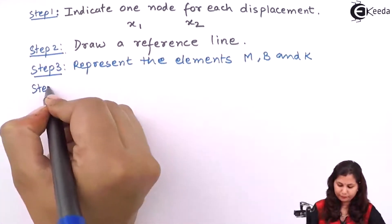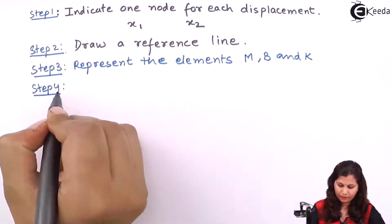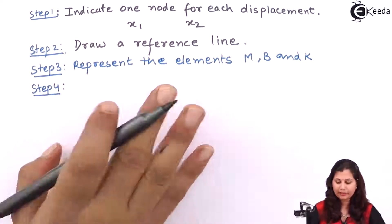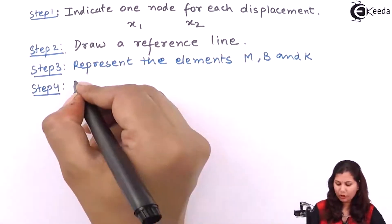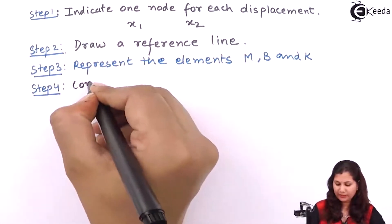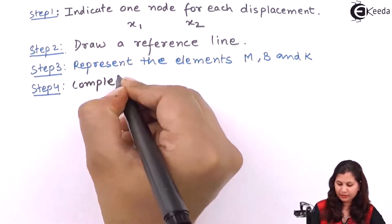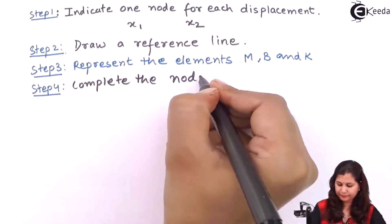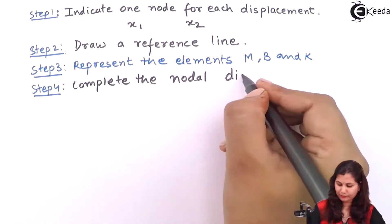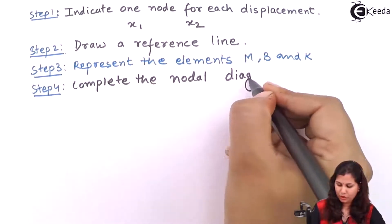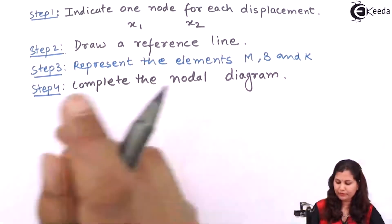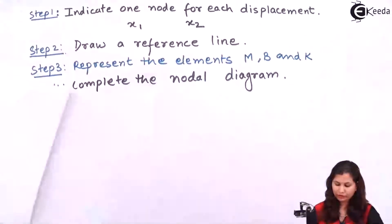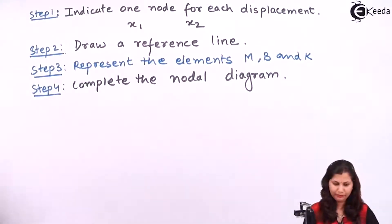Step 4: once you have connected all the elements and represented them, this will complete the nodal diagram. So for this example, if we draw the nodal diagram, let us see what it will be.